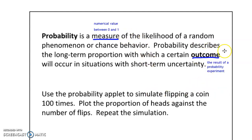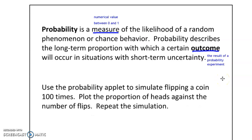Outcomes are the result of a probability experiment. For example, the outcome of flipping a coin could be heads or tails, and the outcome of rolling a die could be a 4 or a 6. When we combine those outcomes together, those are called events, which we'll be talking about in a moment.